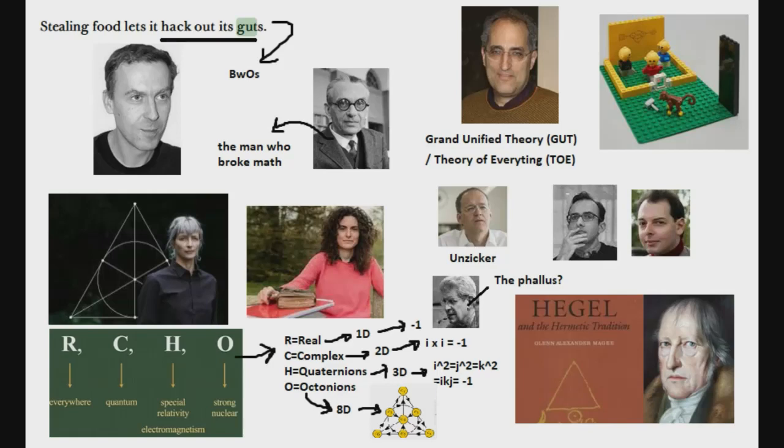Basically in math we have real numbers, which are one-dimensional numbers we all use. Then there are imaginary numbers represented by i, which is the square root of minus one, and which we can plot on a 2D scale. Remember Lacan refers to the phallus as the square root of minus one in his psychoanalytic triptych as it refers to the imaginary realm.